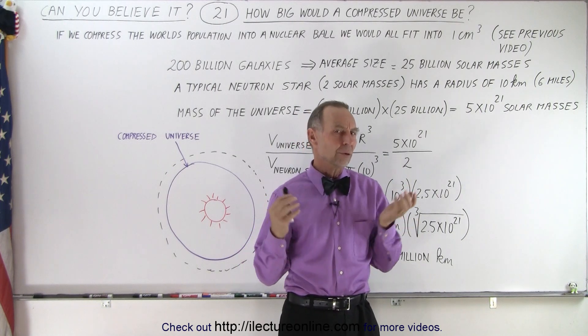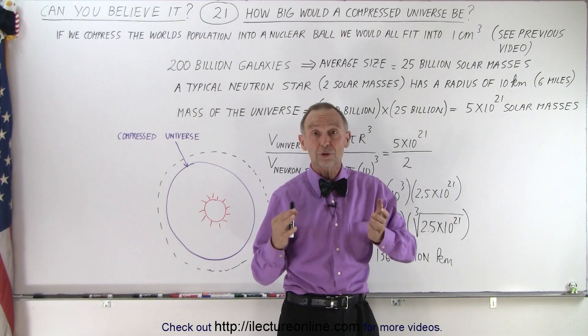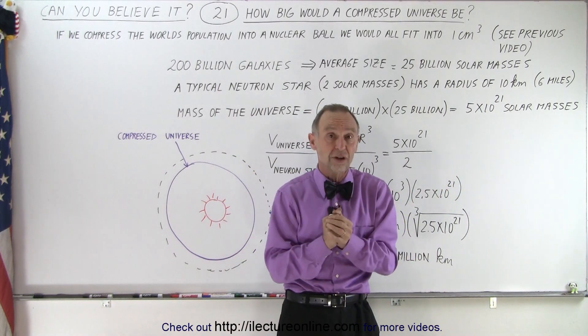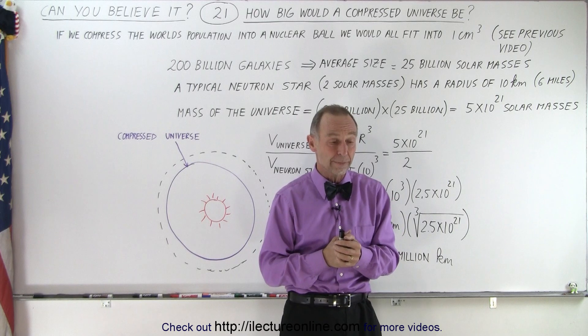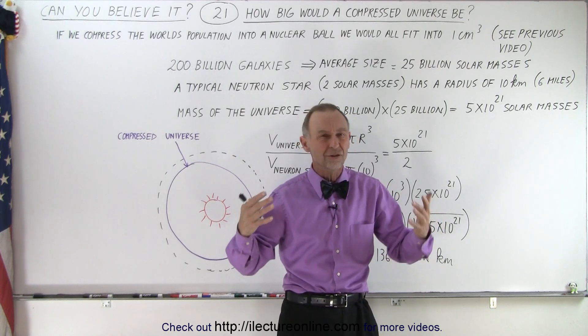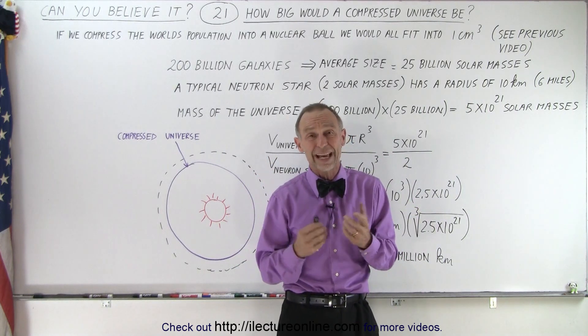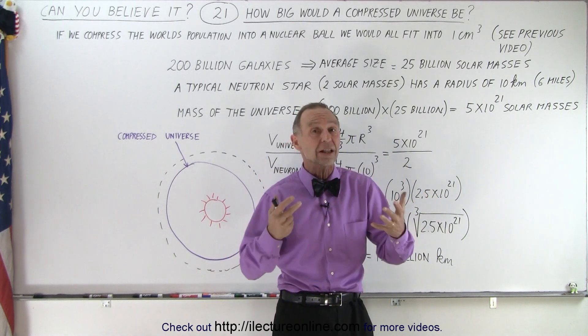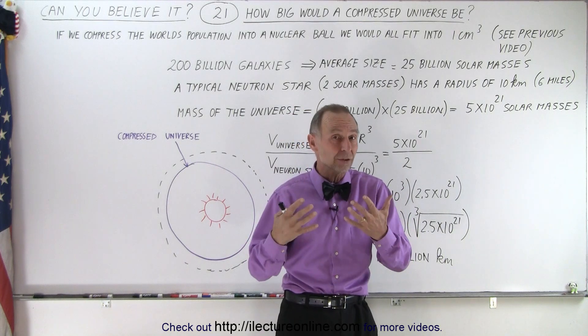Now the question came up: what if we took the entire universe and compressed it so it would be nucleus against nucleus, how big would the universe be? We know the universe is absolutely enormous—just the visible portion contains at least 200 billion galaxies, and each galaxy contains many billions of stars.